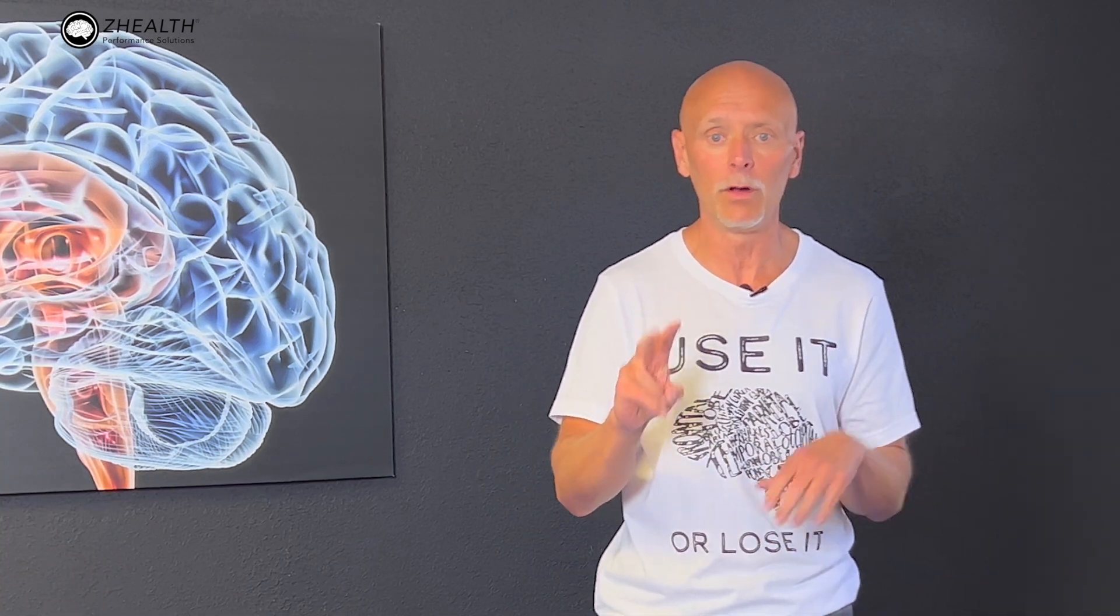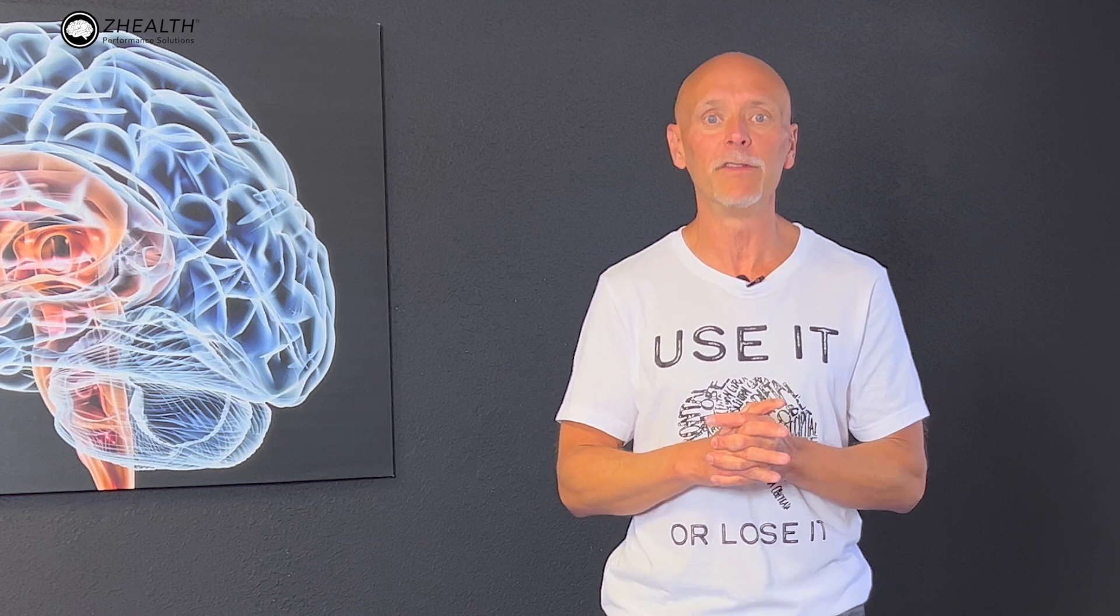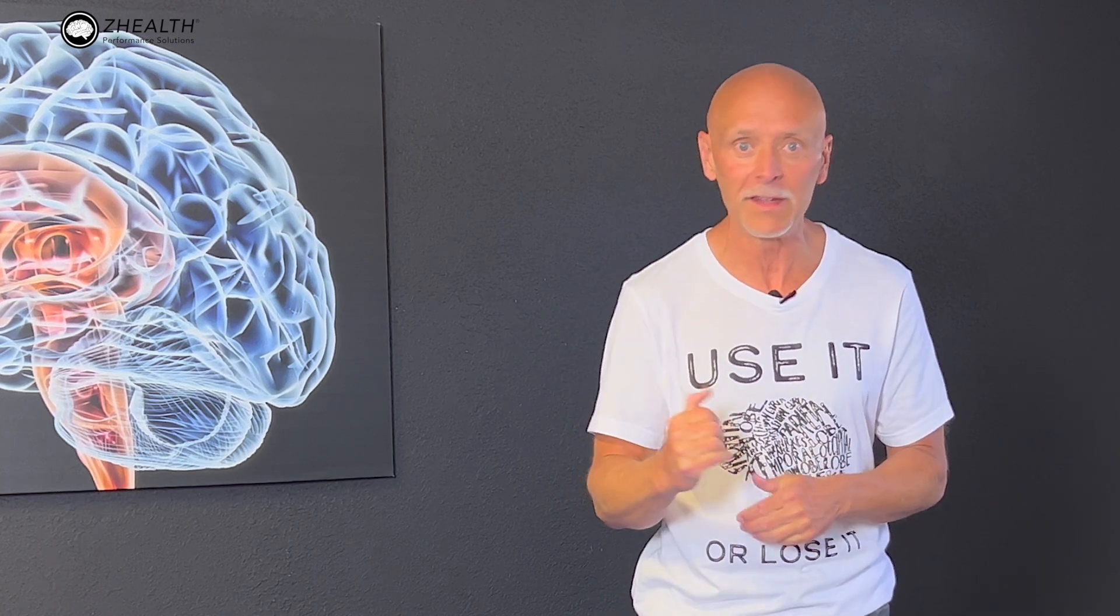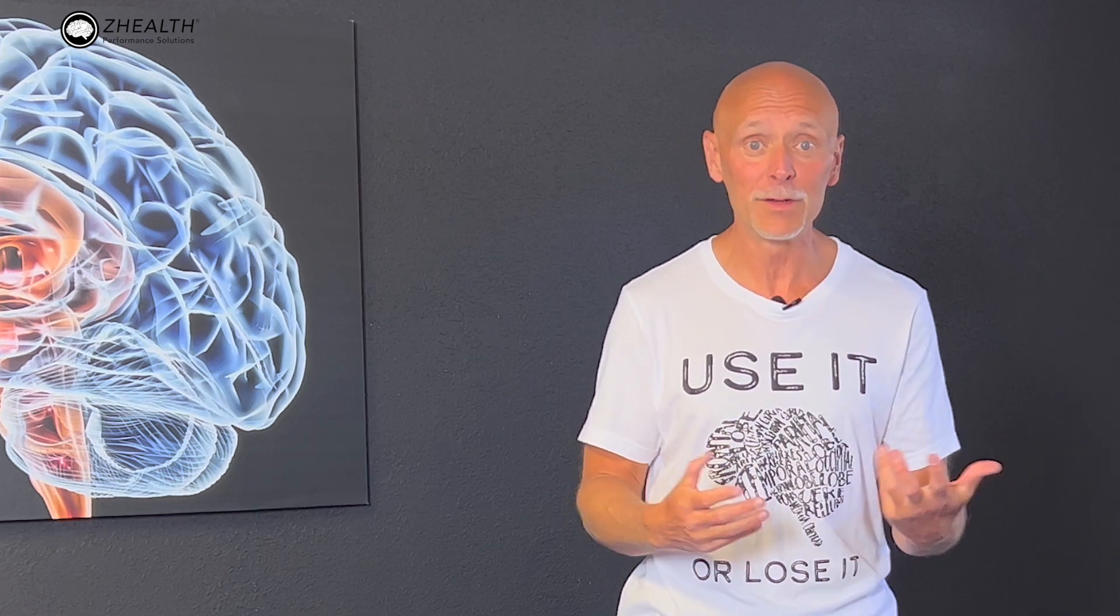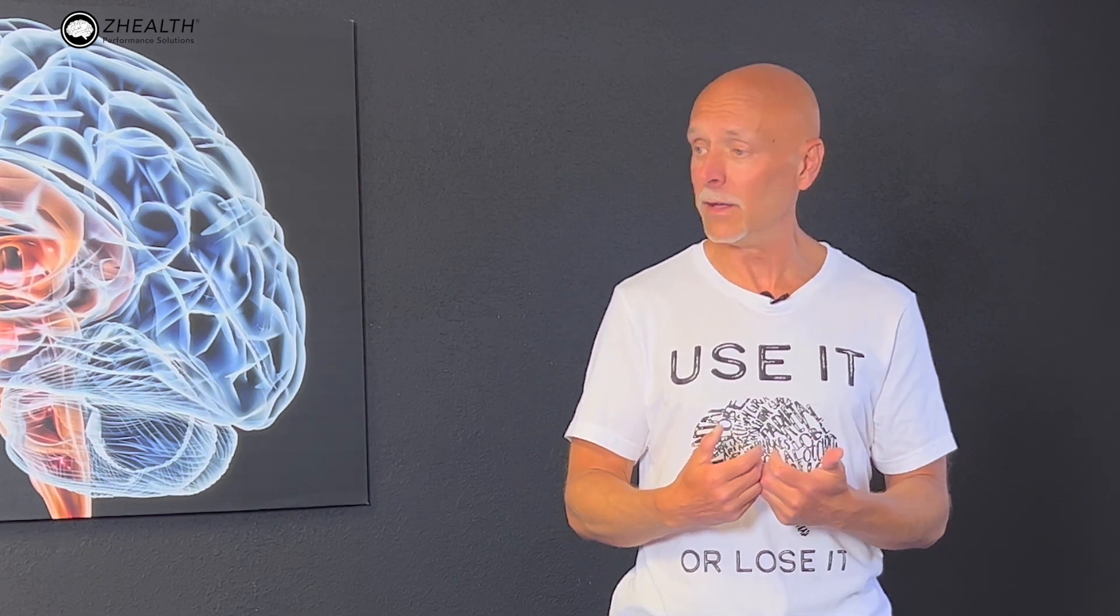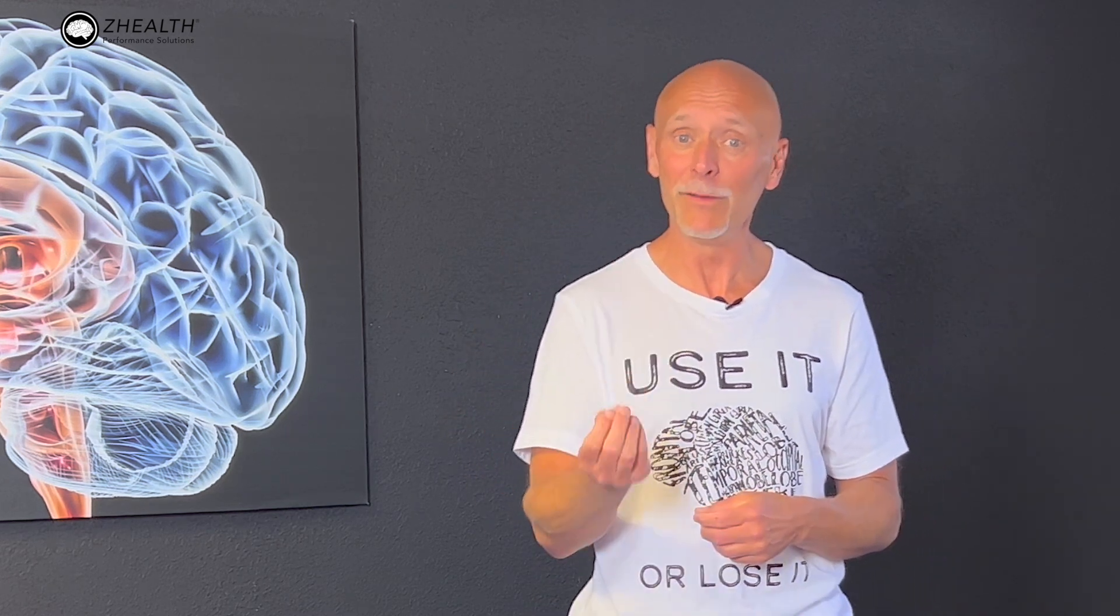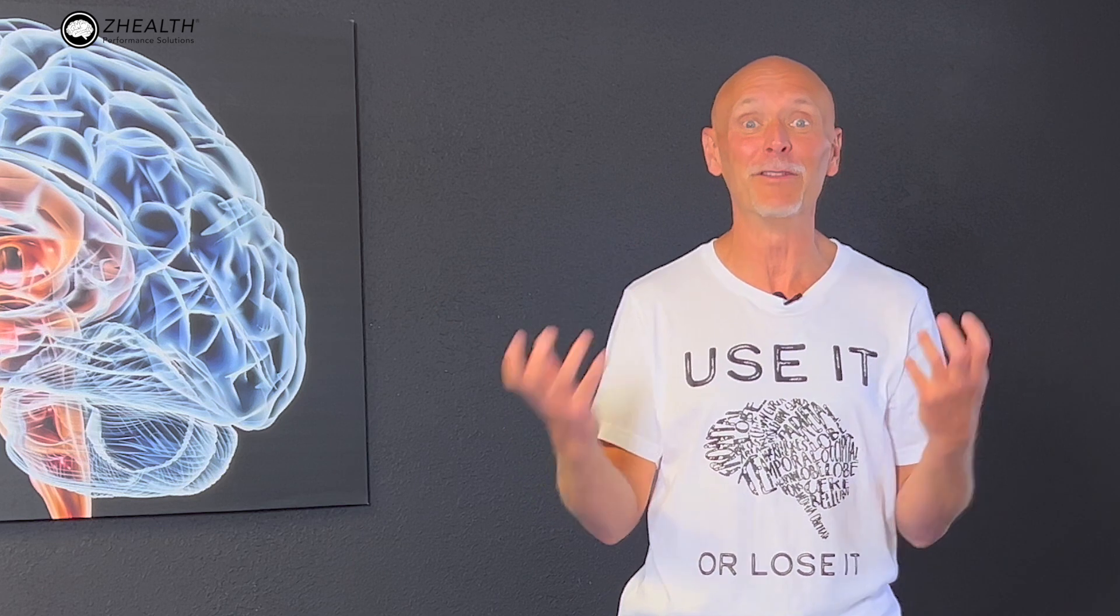If you choose a verbal activity, you have a couple of well-researched versions. One is categorical: you name as many animals as you can in 30 seconds while moving. The other version is choosing a letter and saying as many words as you can that begin with that letter as you're moving. These impact different areas of the brain.